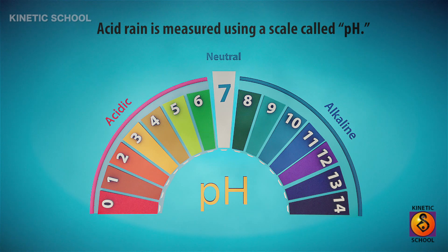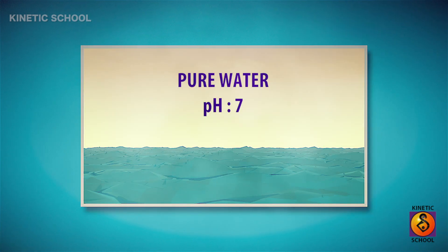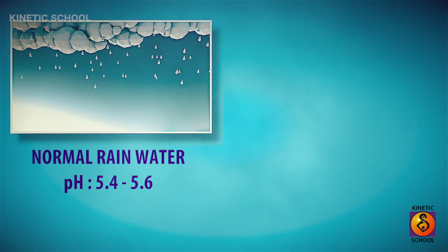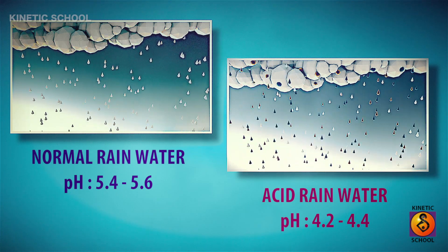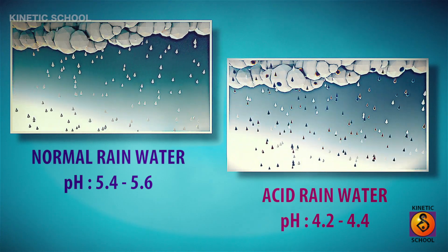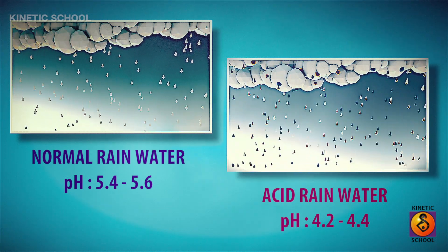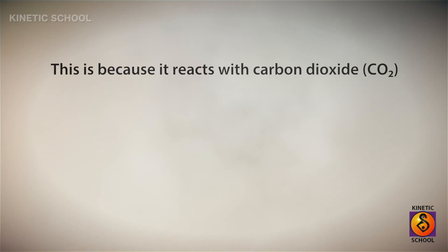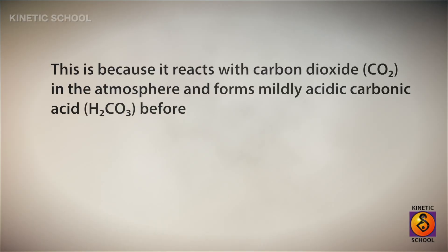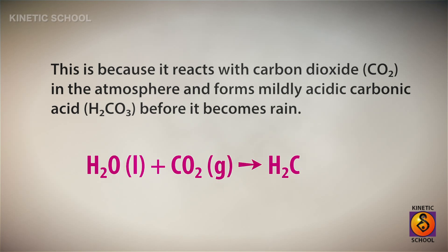Acid rain is measured using a scale called pH. Pure water has a pH of 7, but normal rain water has a pH of 5.4 to 5.6, and acid rain water has a pH of 4.2 to 4.4. Normal rain water is weakly acidic because it reacts with carbon dioxide in the atmosphere and forms mildly acidic carbonic acid before it becomes rain.